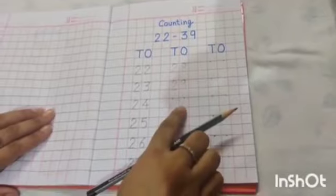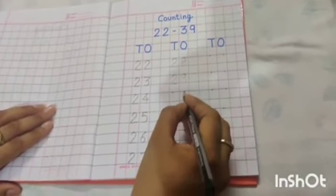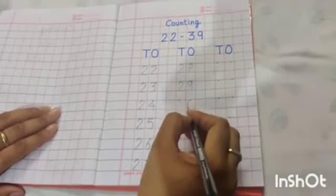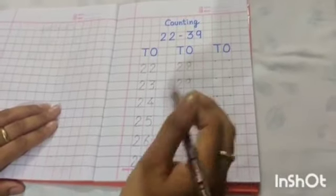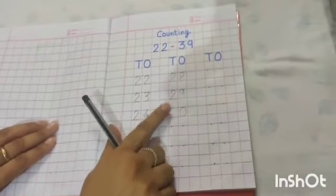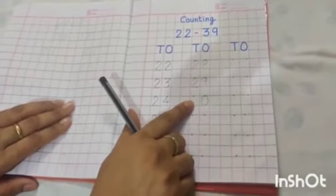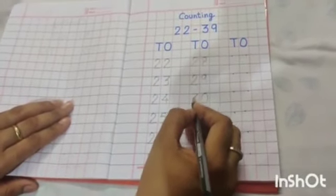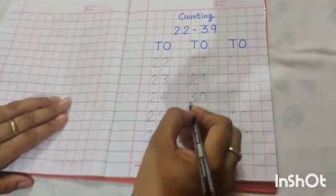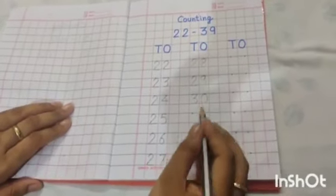Okay, now tell me kids which number will come here? After 9, 0. Yes. Very good. And here which number will come? Next number to 2. So 3 will come here. So the number is 30.